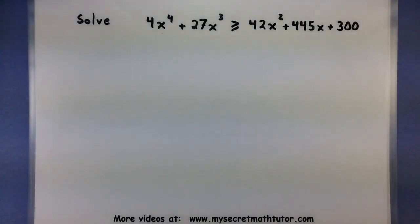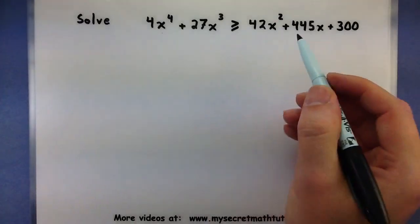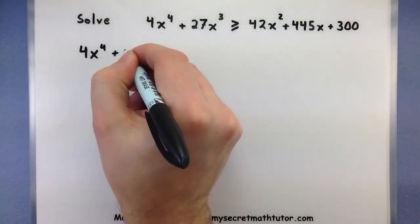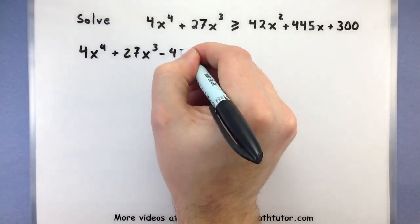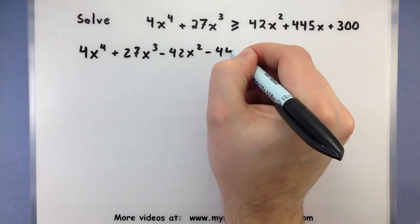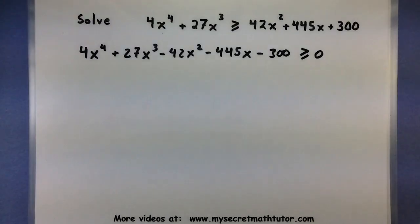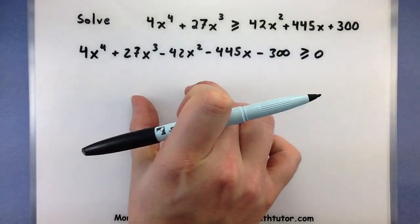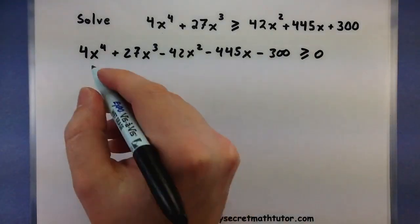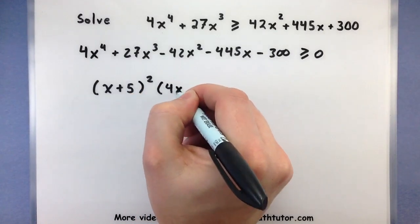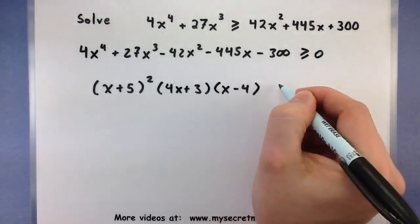For this next example, we'll do a big one: 4x to the fourth plus 27x cubed is greater than or equal to 42x squared plus 445x plus 300. With all inequalities, make sure you get them in relation to zero first. So I'm going to subtract all of those terms to the other side: 4x to the fourth plus 27x cubed minus 42x squared minus 445x minus 300 is greater than or equal to zero. Now the factoring comes into play, and the factors are: x plus 5 squared, times 4x plus 3, times x minus 4, all greater than or equal to zero.